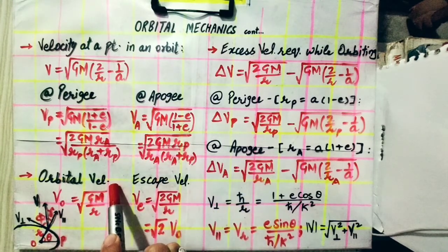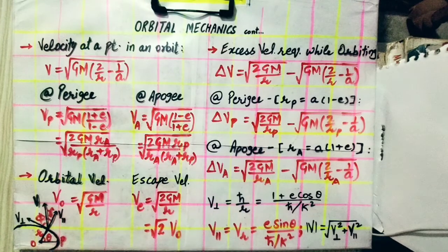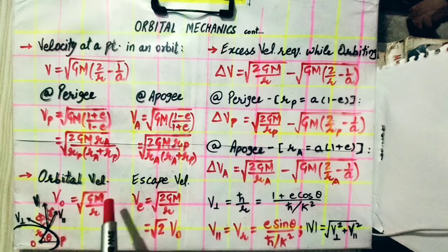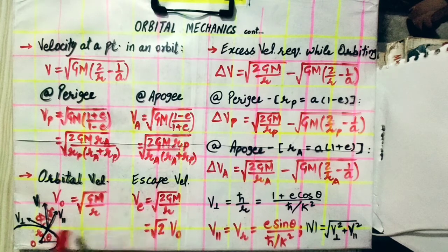The orbital velocity of the satellite while orbiting around a planet in circular orbit is given by this formula, under root GM by R. It is just a balance of centripetal force and centrifugal force. We can derive it from that.